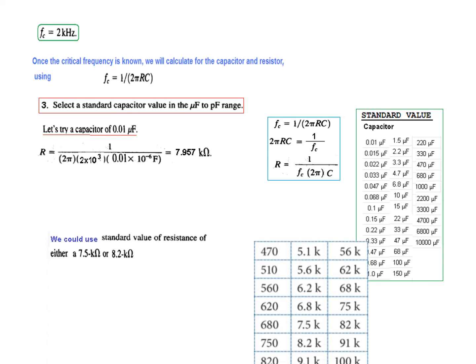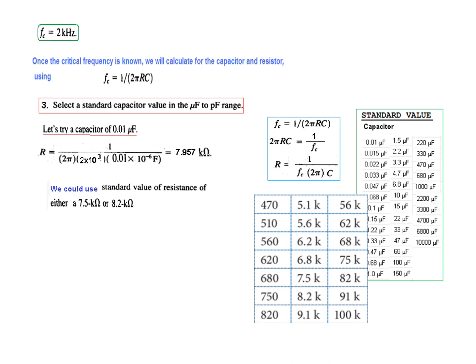But we have to find the nearest standard value. So if we look at this list, the nearest standard value of 7.9 will be 7.5 or 8.2. So from here we have to pick one, and let's pick 8.2.